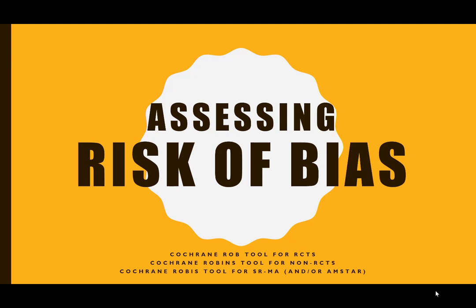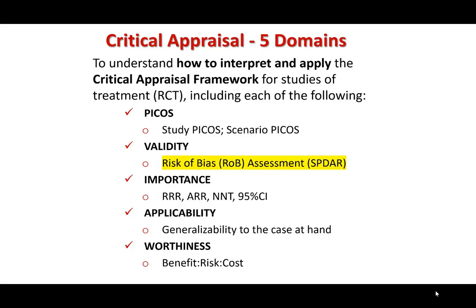We learned in class about assessing risk of bias, and we talked about doing so using the Cochrane risk of bias domains or the Cochrane risk of bias tool for randomized controlled trials, where you take a look at S, P, D, A, and R — selection, performance, detection, attrition, and reporting bias. There are similar tools for non-randomized controlled trials called the ROBINS tool and the new ROBIS tool for systematic reviews and meta-analyses, though some people still use AMSTAR as a bit of a proxy for that.